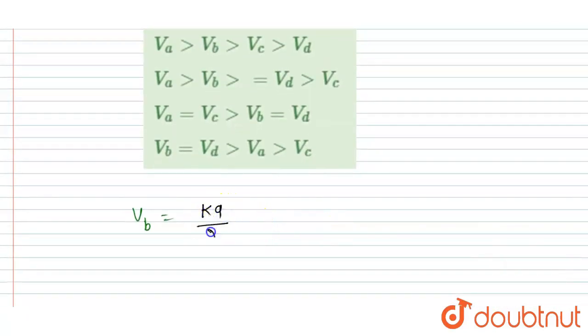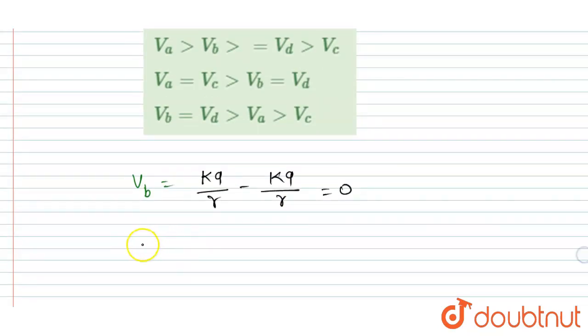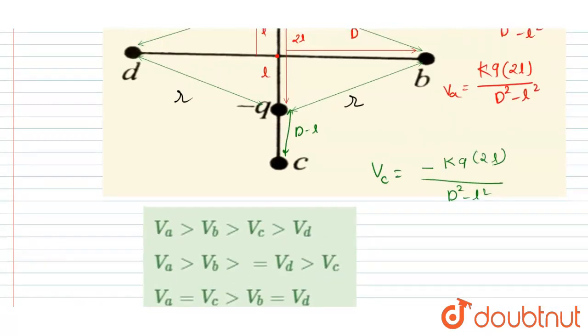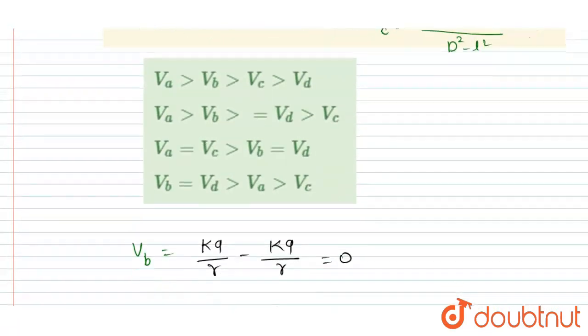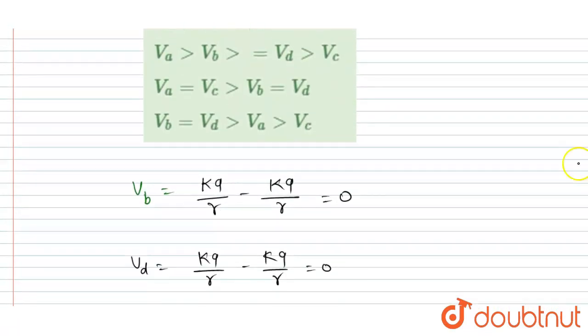is at the same distance from positive charge and negative charge. So the potential at point b and point d will be equal to zero, since they are having equal distance from the positive as well as the negative charge. So now you could see already the magnitude of potential at a and c are equal, and they are